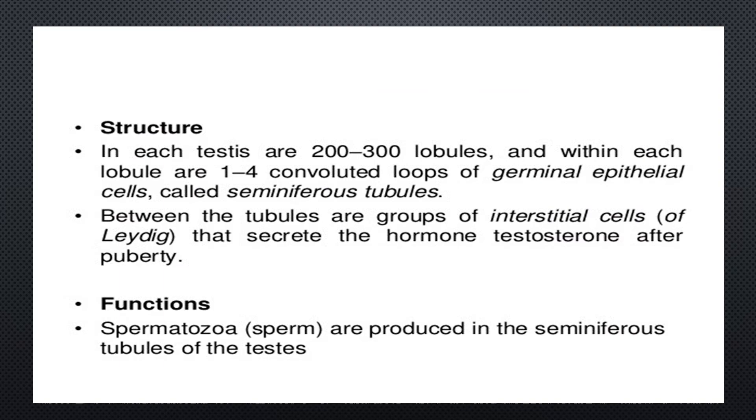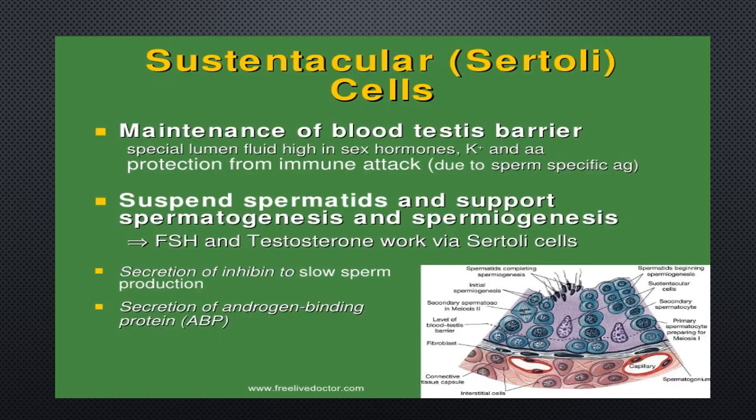Sperm are produced in the seminiferous tubules within the lobules. The sustenticular — or Sertoli — cells maintain the blood-testes barrier and produce a special luminal fluid that is high in sex hormones and potassium, providing protection from immune attack due to sperm-specific antibodies.